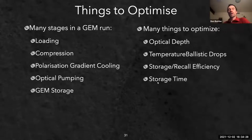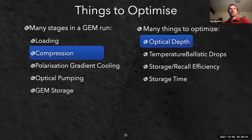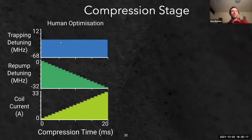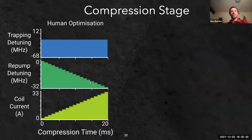We decided to use a machine learner to try something new. There are many things to optimize - loading, compression, polarization gradient cooling, optical pumping, memory storage itself - and many possible cost functions: optical depth, temperature, recall efficiency, storage time. We start with compression and optical depth as the cost function, trying to catch the most atoms compressed into the smallest space.